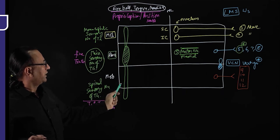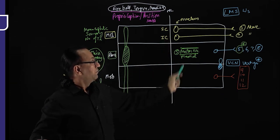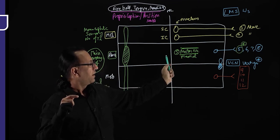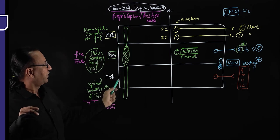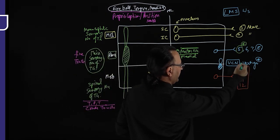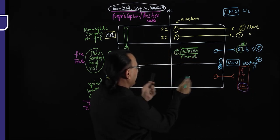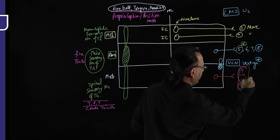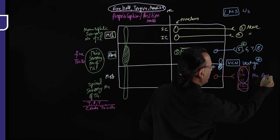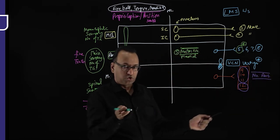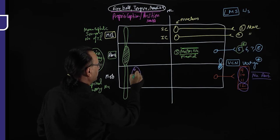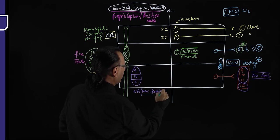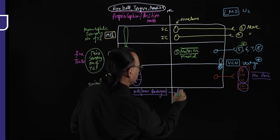If there are lateral brainstem lesions, there will be sensory problems related to the trigeminal nerve. Medial brainstem lesions, like medial pontine syndrome, affect the motor nucleus causing problems with the muscles of mastication, because the motor nucleus is medial. Sensory nuclei are lateral. Cranial nerves 9, 10, and 11 form the nucleus ambiguous, located in the lateral medulla oblongata, controlling muscles of the palate, pharynx, and larynx.